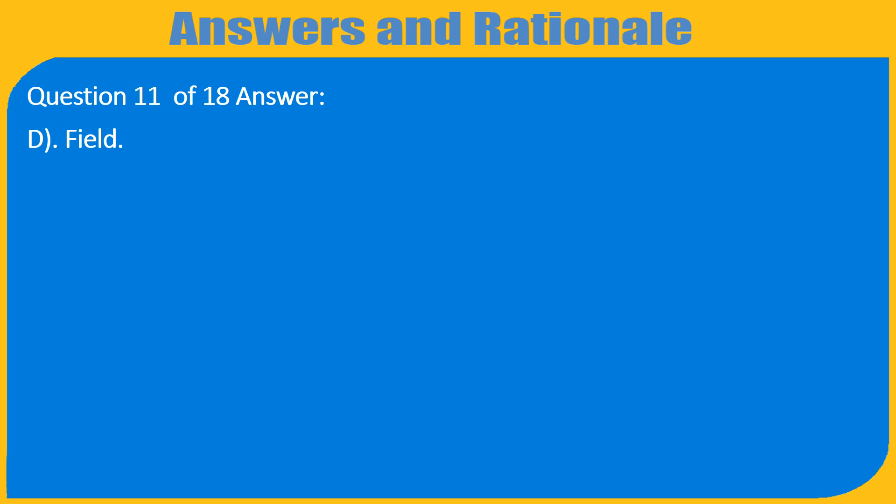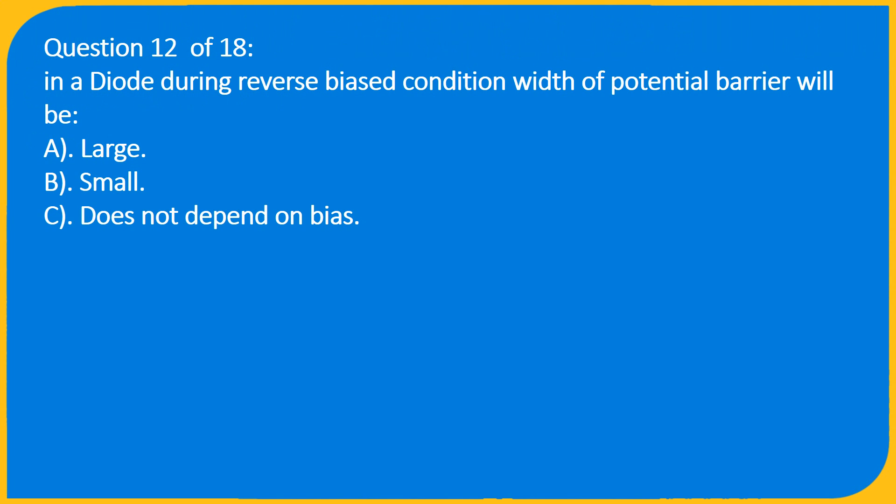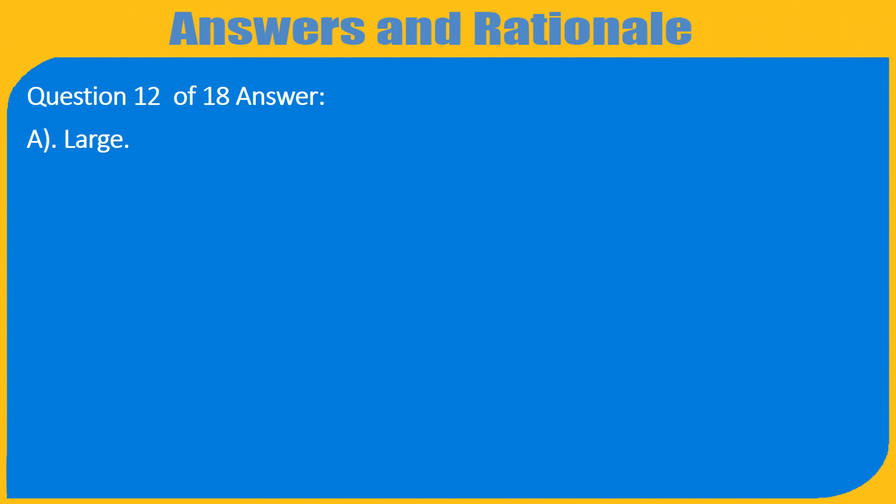Question 12 of 18: In a diode during reverse bias condition the potential barrier will be: A. Large. Question 12 of 18, A. Large.